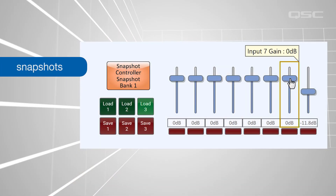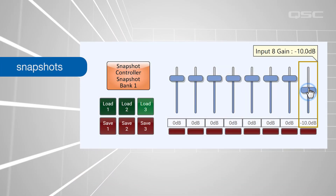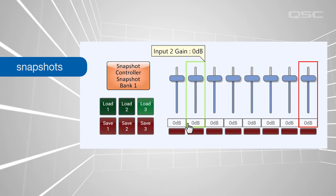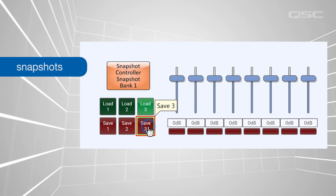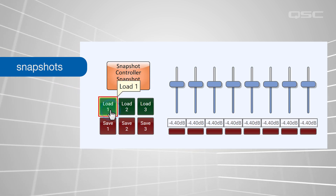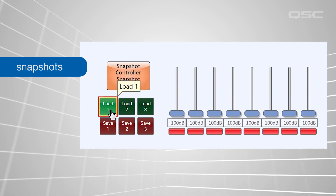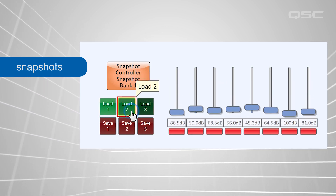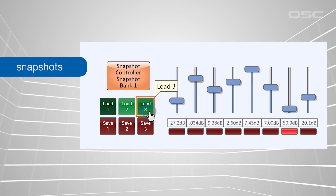We'll look at the different ways to control the native Q-SYS components in the schematic beyond their basic functionality, as well as how to put control of your design into the hands of the end user. We'll start with snapshots, which are used to record the state of one or more controls, so you can recall the state with a single action rather than readjusting every control manually.